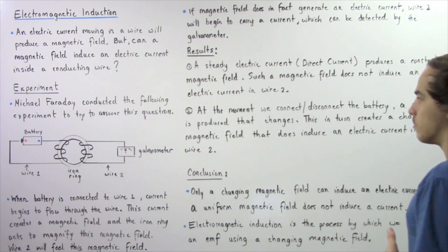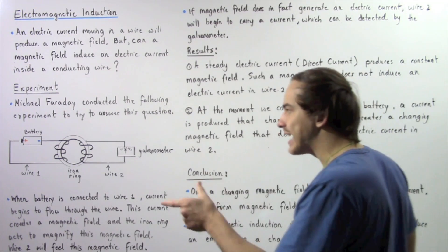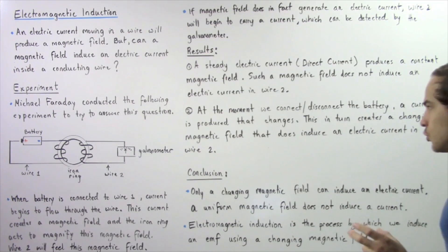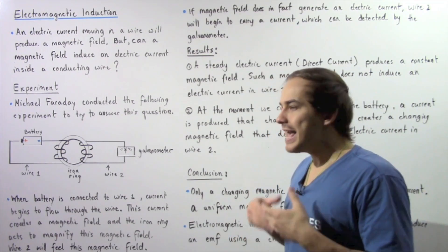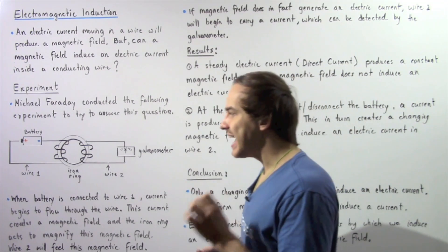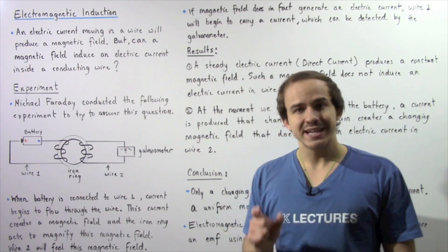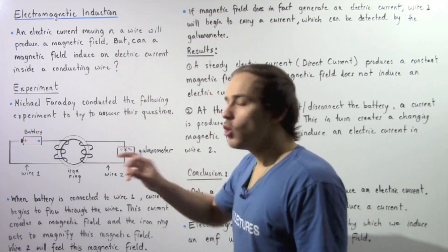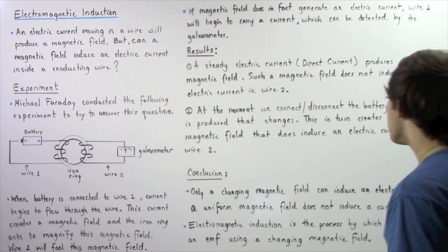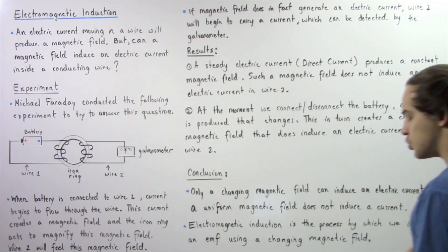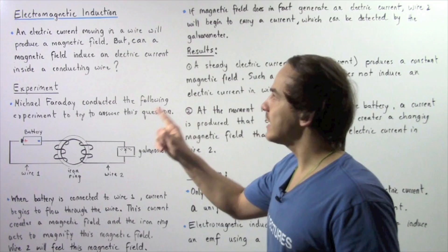The second point: at the moment that we connect or disconnect our battery from wire number one, an electric current is produced that changes — it is not constant. This non-constant electric current produces a non-uniform magnetic field. A non-uniform magnetic field will, in fact, produce an electric current which will be picked up by the galvanometer. This changing magnetic field induces an electric current in wire number two, and this process of induction is known as electromagnetic induction.